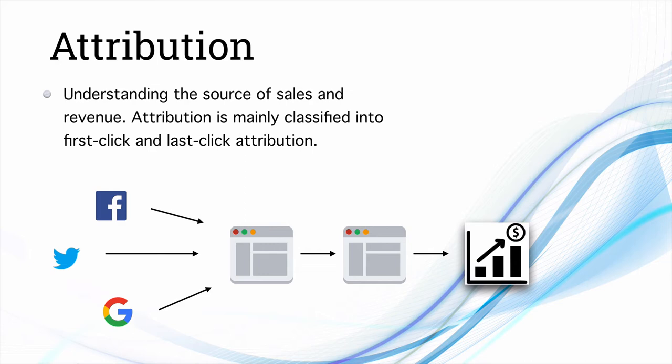Maybe 15 sales came from Facebook and 5 from Google search — so no sales came from Twitter. If Google is providing less ROI and Facebook is providing good ROI, you can decide to invest more effort in Facebook. If you are investing a lot of money and energy on Twitter but cannot attribute any sales back to it, you might not want to do that. That's how attribution works.